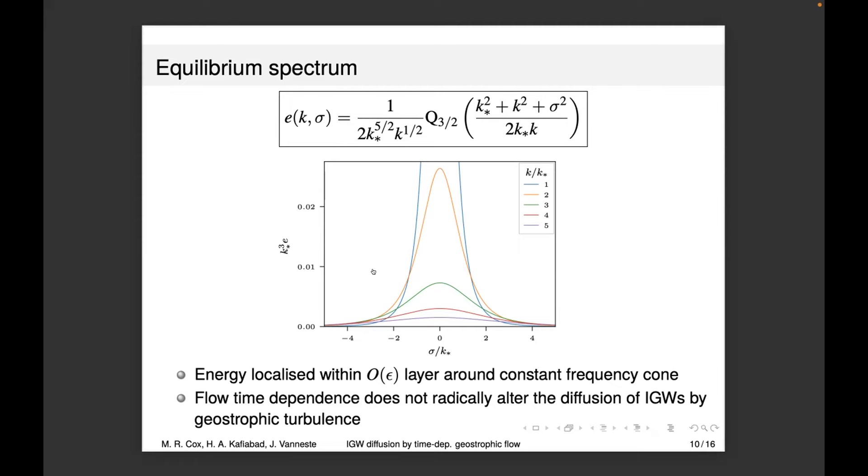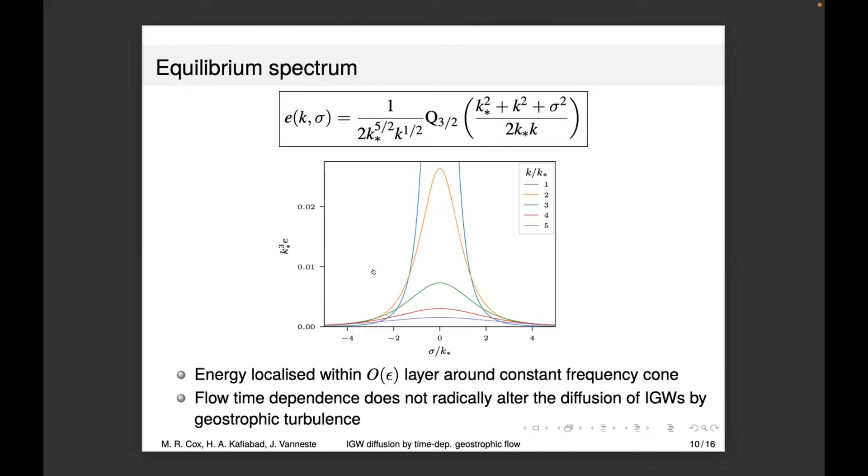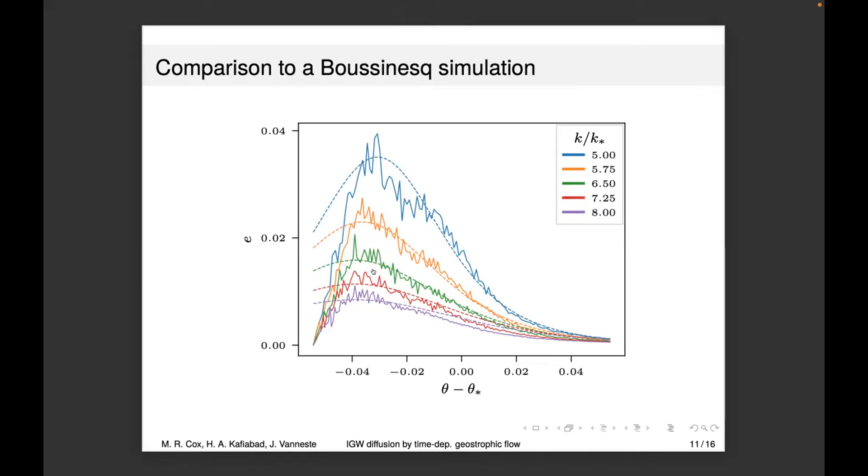This is the 3D Boussinesq simulation I showed you earlier. The jagged lines are the simulation and the dotted lines are the exact solution fitted to it. We have two parameters: one corresponding to the scale of the forcing and one determining the boundary layer thickness. We fitted the same parameters on each—you fit to the top one and the rest have the same parameters. The exact solution has roughly captured both the decay of the energy and how energy decreases as you move along the cone. It's in pretty good agreement.